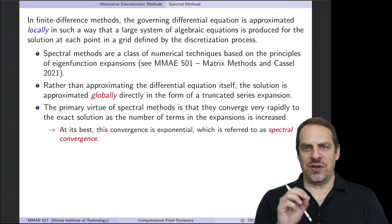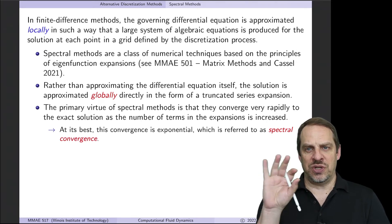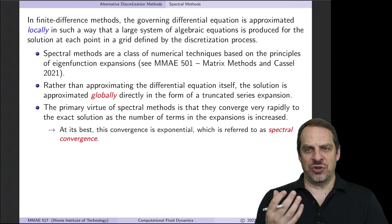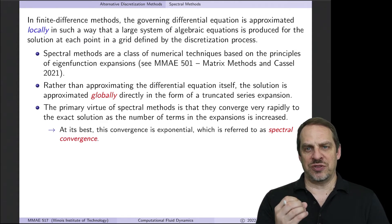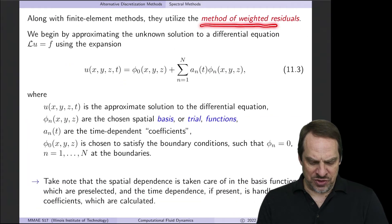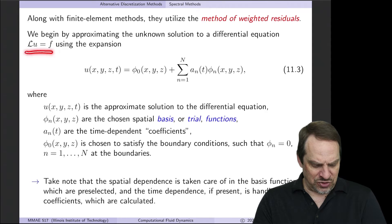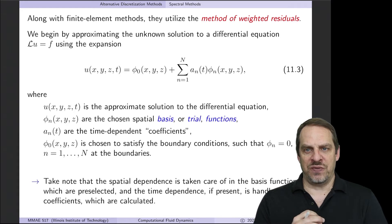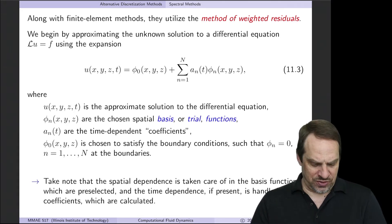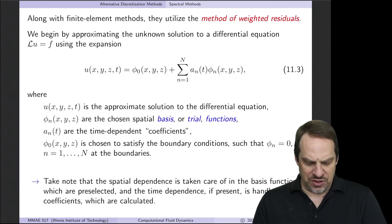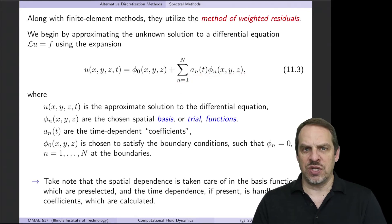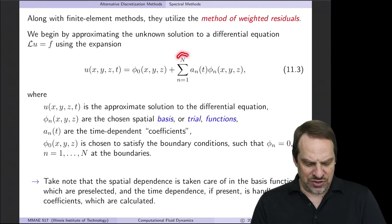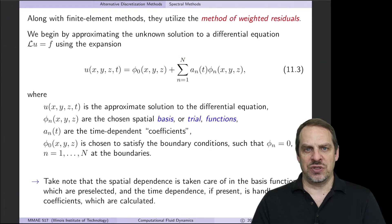Rather than adding more cells or points or elements as we do in other techniques, now we're going to be adding additional terms to a truncated series expansion that approximates the solution. This is based on the method of weighted residuals — that's also the case for finite element methods. Let's say we have a differential equation, Lu equals F, where the script L is a differential operator operating on the dependent variable U, and F is the right-hand side forcing function. We're going to expand that unknown solution U as a series expansion of A's times the phi's — a truncated series with capital N terms.